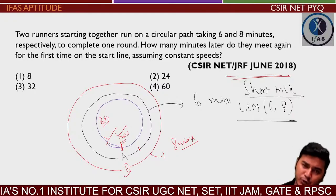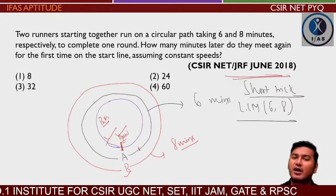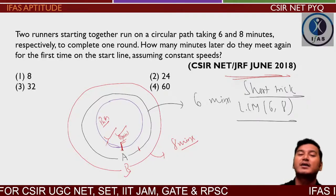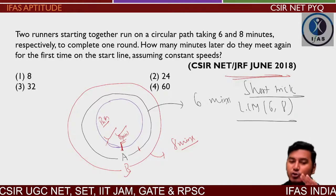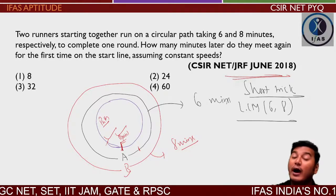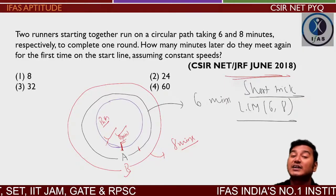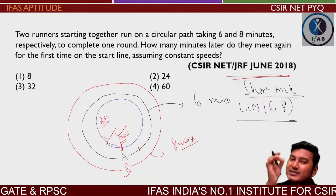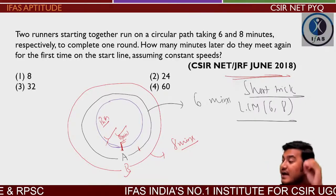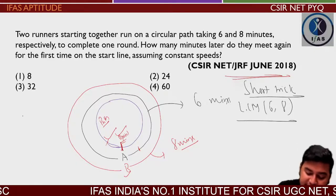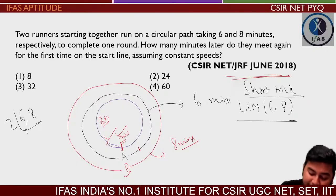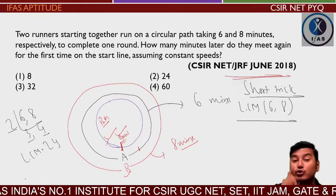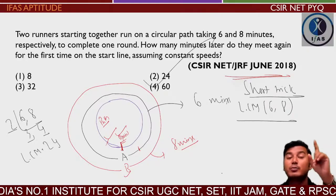The short trick for this type of question is LCM. Find the LCM of 6 and 8. LCM of 6 and 8 is 24. This concept can appear in many forms — two clocks running, two travelers, and so on. The answer is always the LCM of the times. So LCM of 6 and 8 = 24 minutes is the answer.